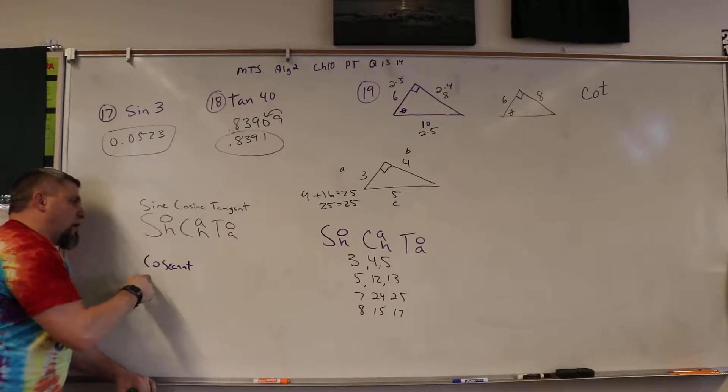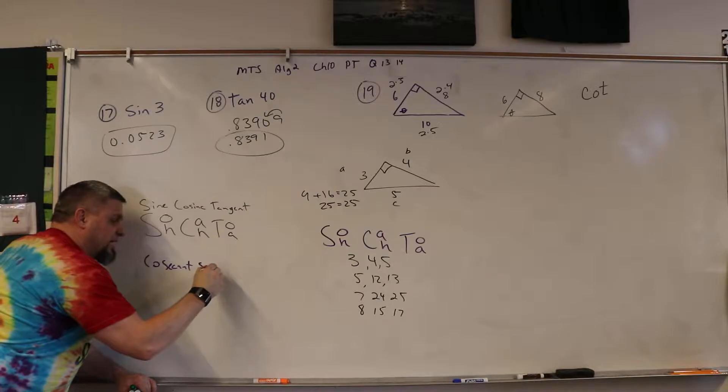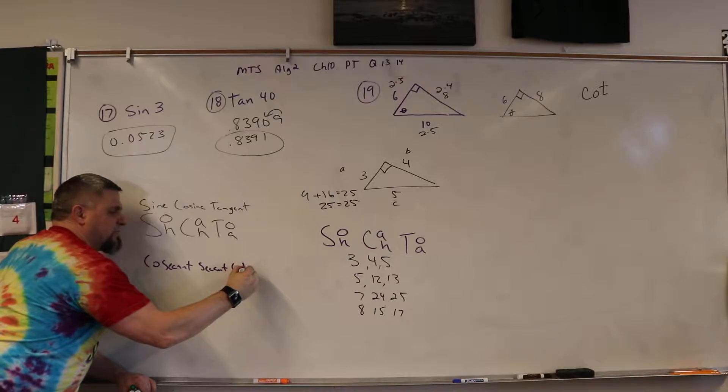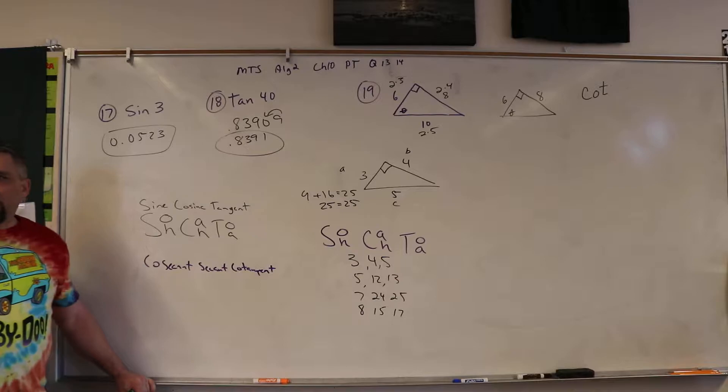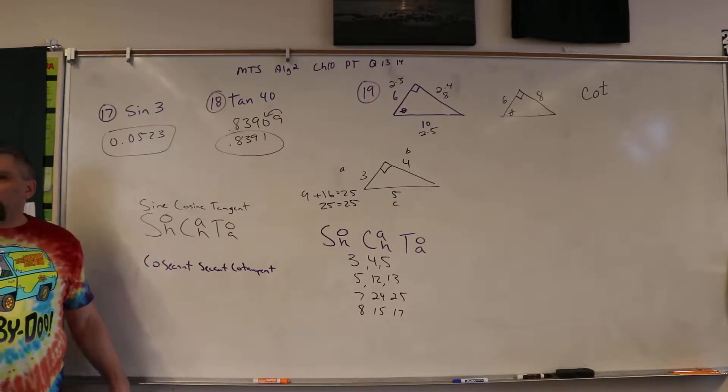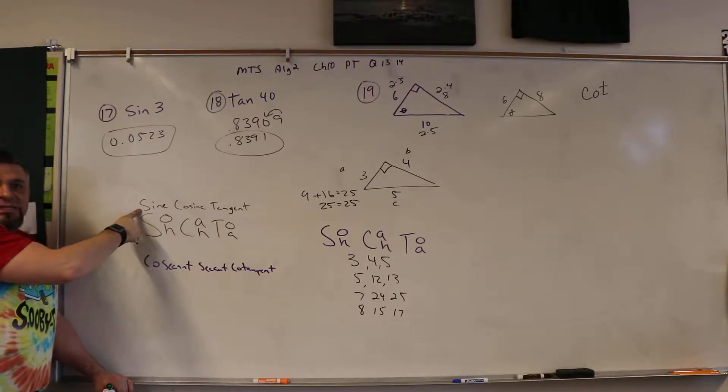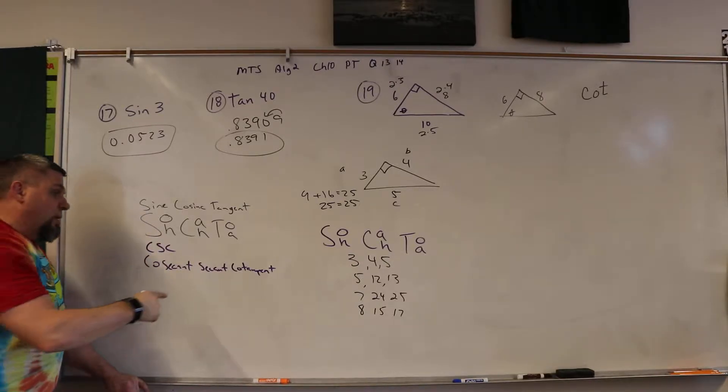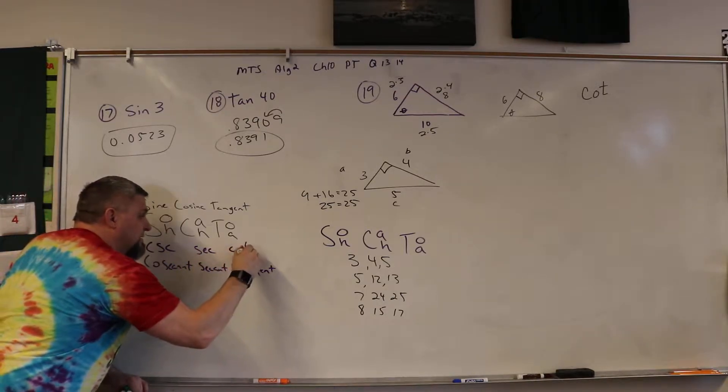But then there was another set: cosecant, secant, cotangent. Now I know that the tangent goes with the cotangent. So the way I remember which one goes with the other is by just putting the co and the no co. Does that make sense? And so this one is cosecant, this one is secant, and this one is cotangent.